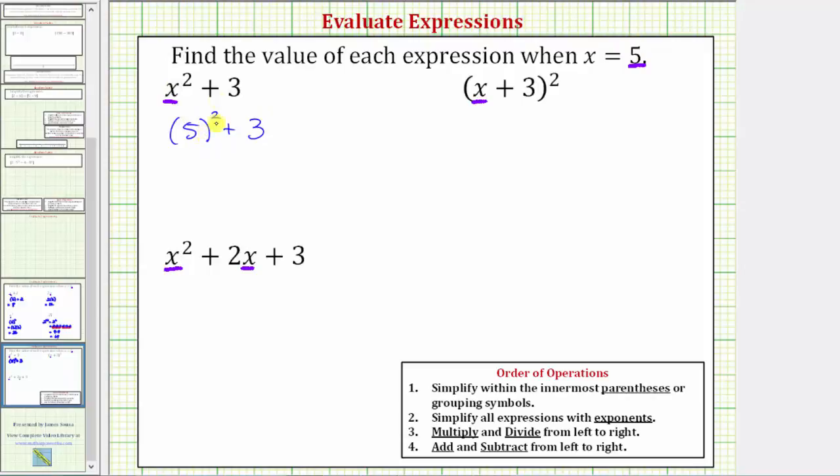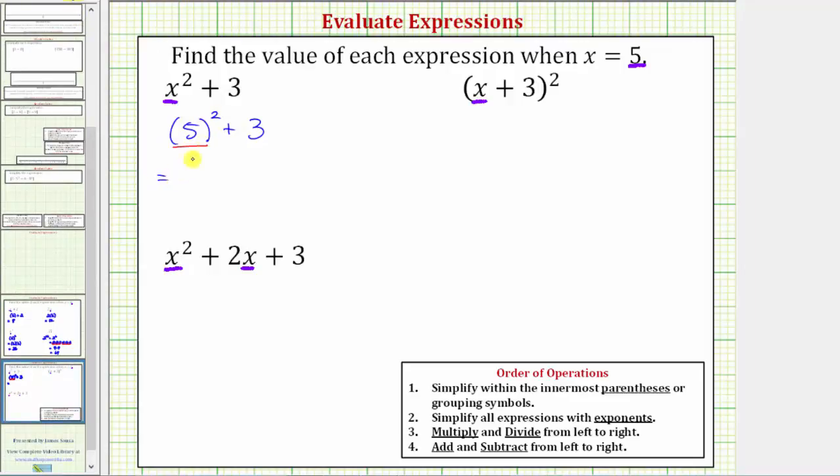Now that we've performed this substitution, we need to evaluate this expression. Following the order of operations, we simplify all expressions with exponents before we add and subtract. So for the next step, we simplify five squared, which equals five times five, which equals 25. So this simplifies to 25 plus three, which equals 28.